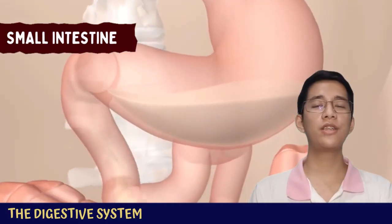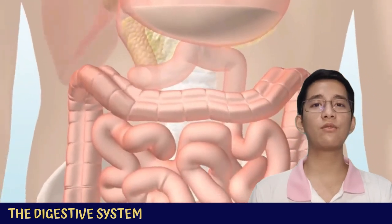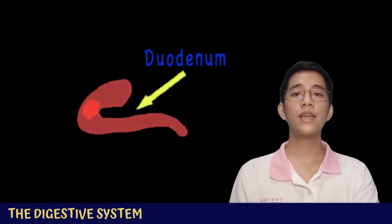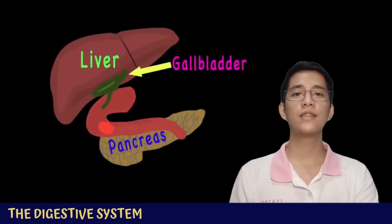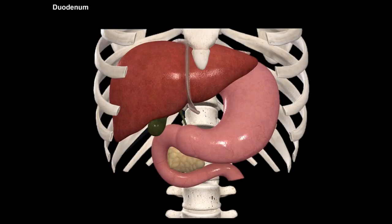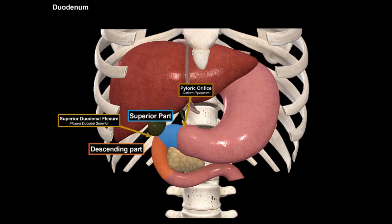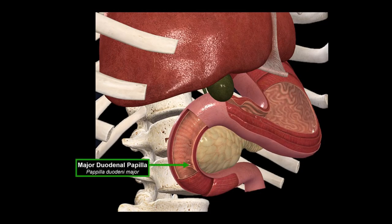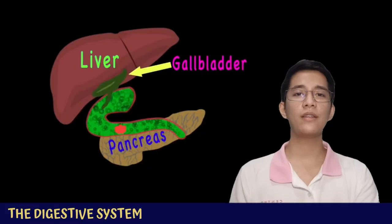Once food particles reach the small intestine, it breaks down food and eliminates unnecessary components. The small intestine has three parts. First is the duodenum, where absorption actually begins. Bile and pancreatic enzymes from the pancreas and liver help break down food particles here. The duodenum is subdivided into four parts: the superior, descending, transverse (also called horizontal), and ascending parts. The major and minor duodenal papillae at the descending part serve as openings for the main and accessory ducts of the pancreas.